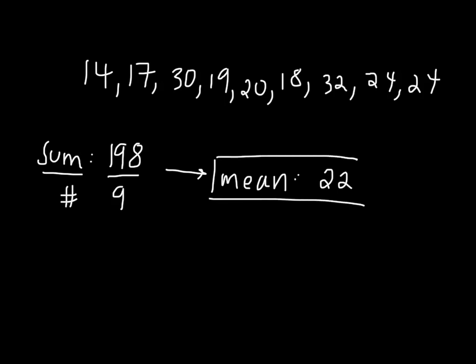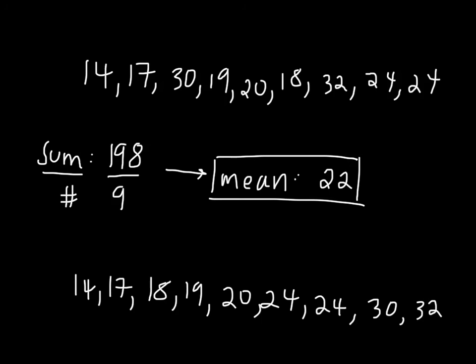Next let's find the median. We need to line up these numbers in order from least to greatest. Now we're going to cross out the numbers beginning with the least and the greatest, continuing towards the center. And 20 is our median.